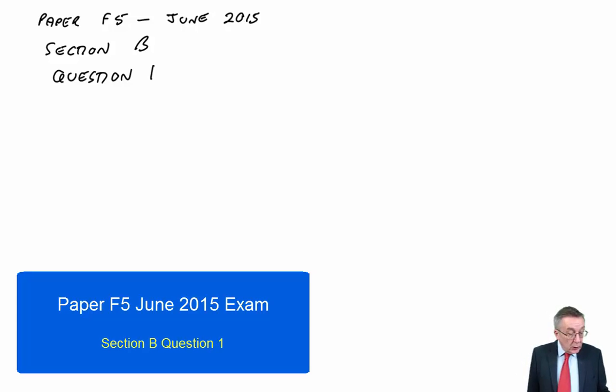Okay, we're now going to go through section B of the paper F5, June 2015 exam. I've already been through section A. Those lectures are uploaded as well. But let's start section B. First of all, question 1. Remember, you can do the answers in any order, but I'll obviously record them in number order.